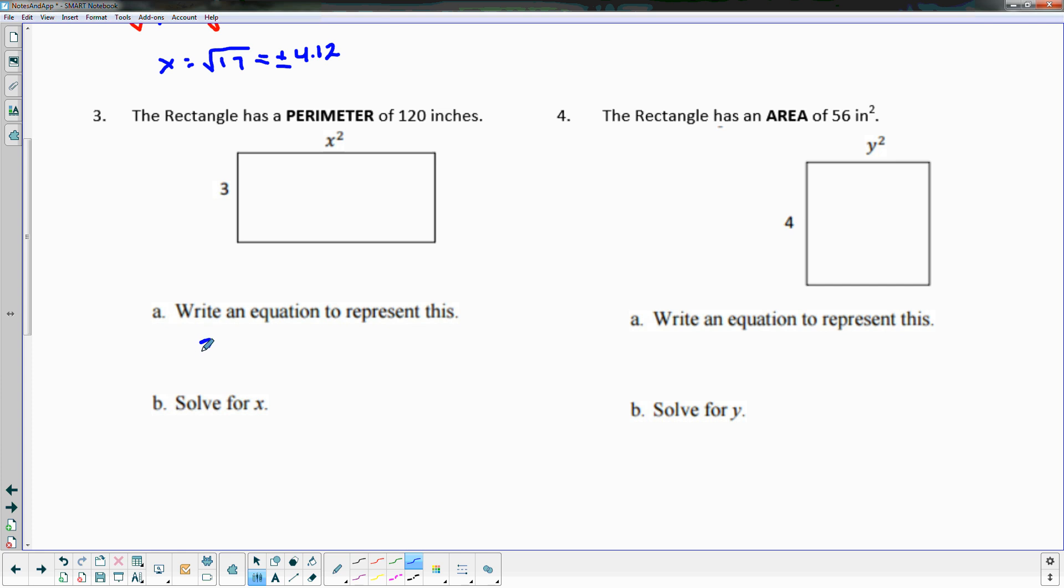We know perimeter is all the sides added together, so in this case I would have 3 plus x², there's also a 3 over here and there's an x² down here, which I'll need both of. So I'll say plus 3 plus x², and that's going to equal my perimeter of 120.